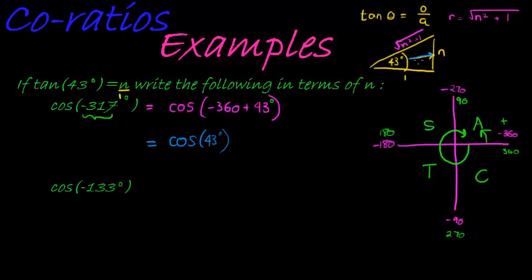Cos is adjacent over hypotenuse. So cos is simply 1 over the square root of n squared plus 1. And that's it.